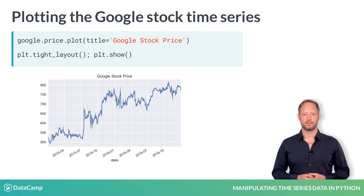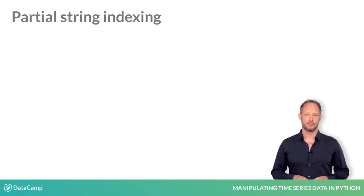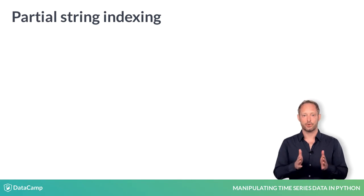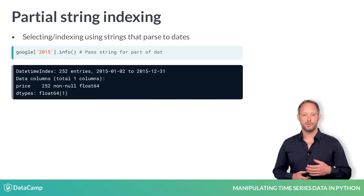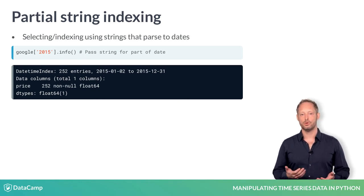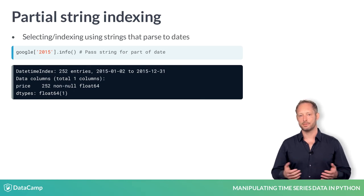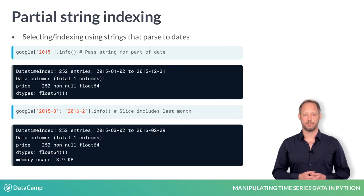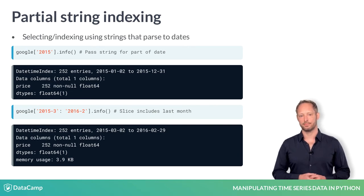To select subsets of your time series, you can use strings that represent a complete date or relevant parts of the date. If you just parse a string representing a year, Pandas returns all dates within that year. If you parse a slice that starts with one month and ends at another, you get all dates within that range. Note that the date range will be inclusive of the end date, different from other intervals in Python.